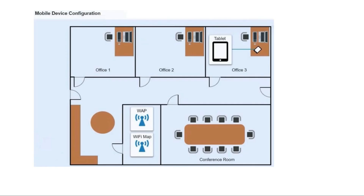This is the mobile device configuration and the tablet configuration for Ana, the CEO's office. There is office 1, office 2, office 3, and this is the WAP — the wireless access point. This is the Wi-Fi MAC address for this mobile configuration settings.